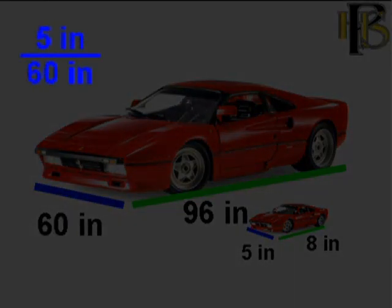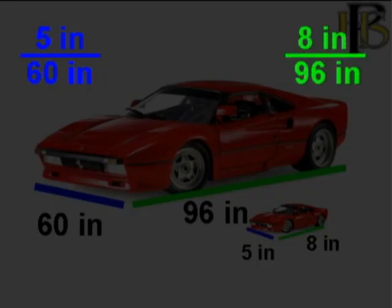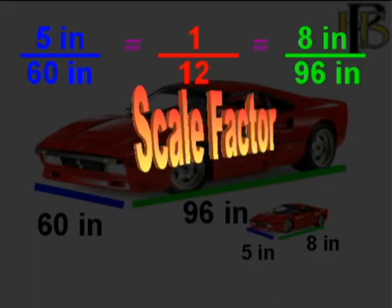So I know that five inches goes with 60, and I also know that on the length, that 96 inches goes along with eight. Notice I have my ratios both in the same form, where it's going from the model to the real actual automobile. And notice they both reduce to the same number, one over 12. That's my scale factor.